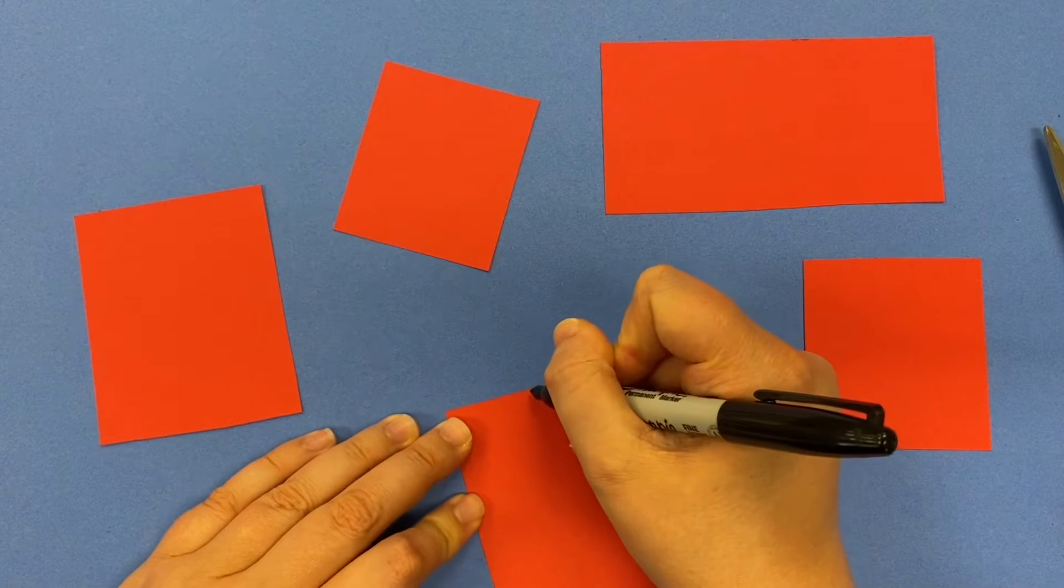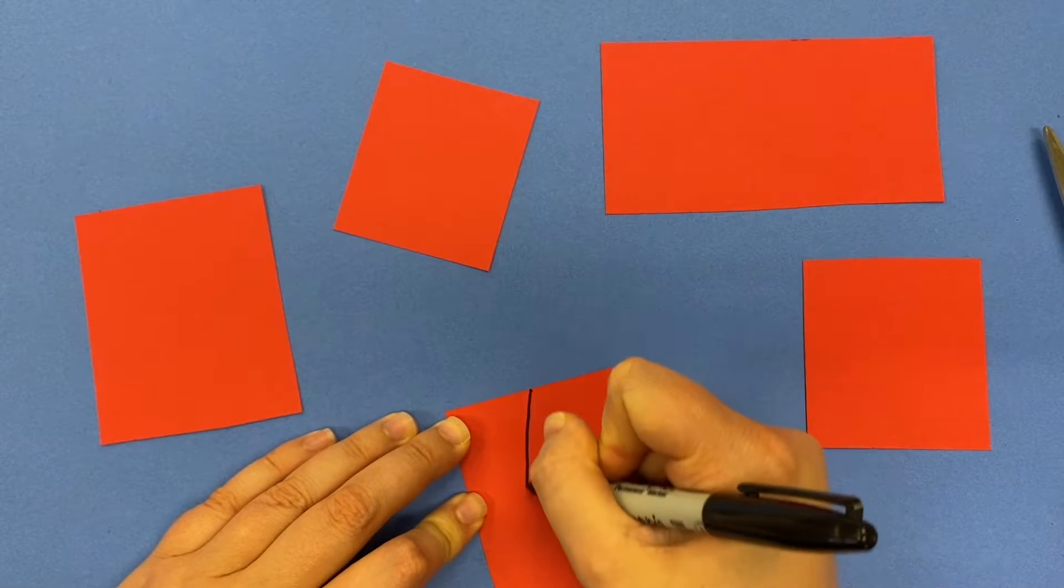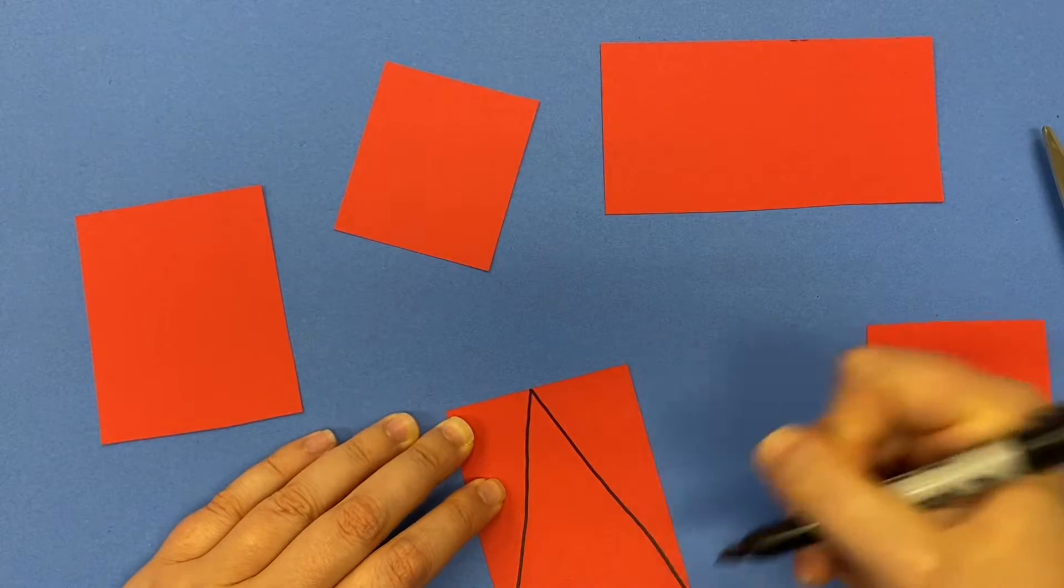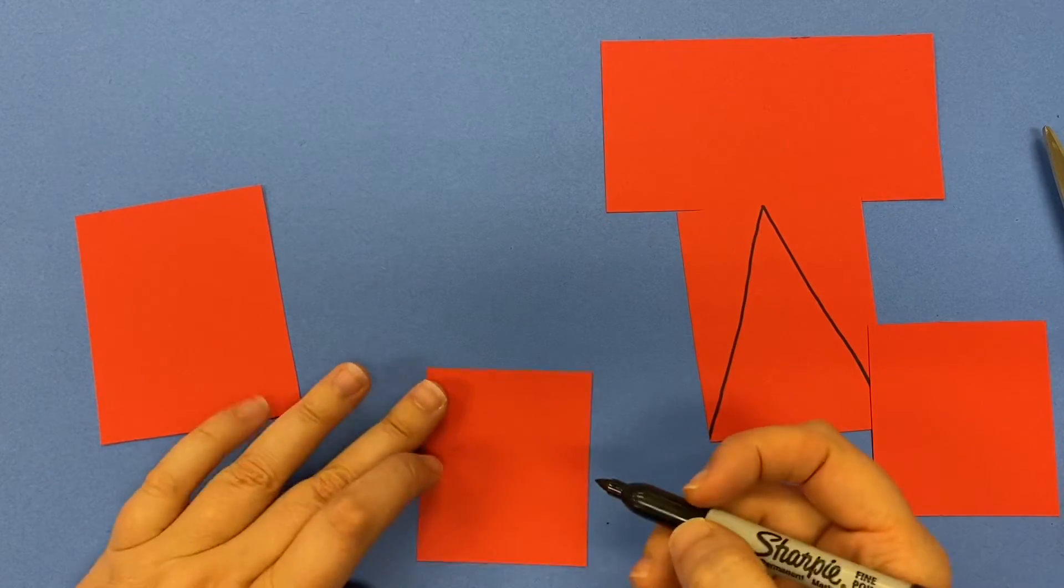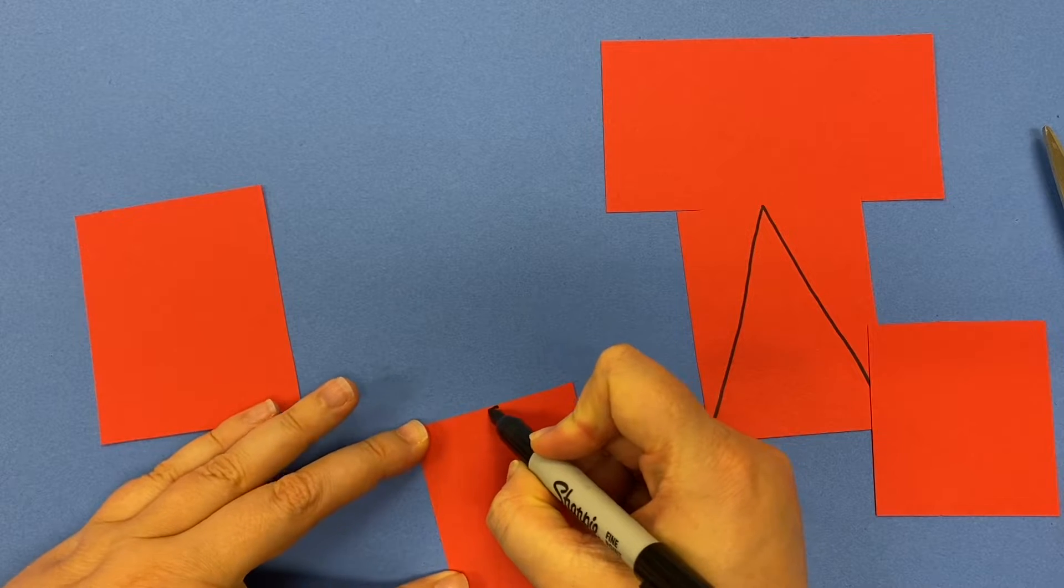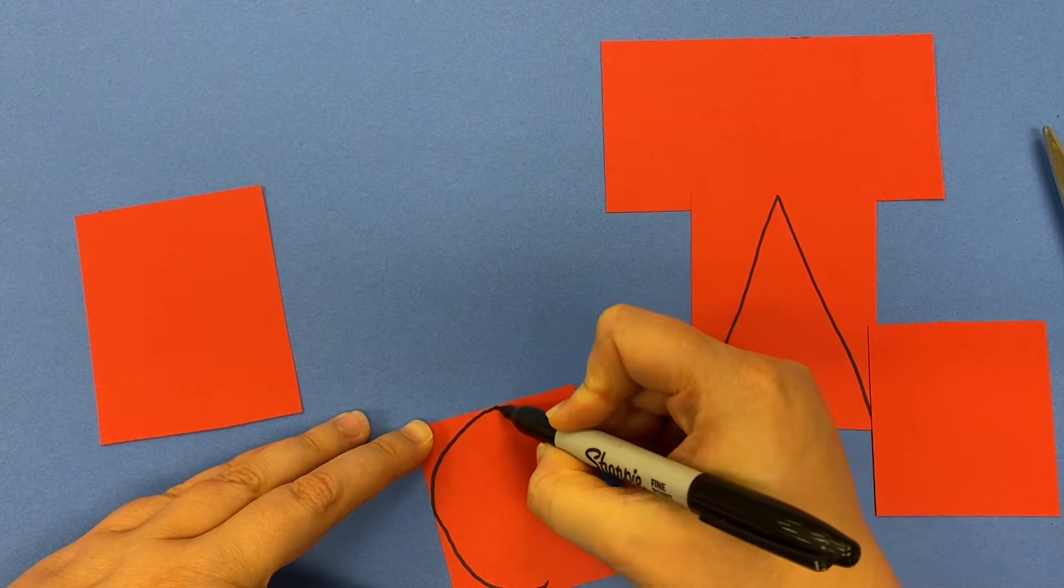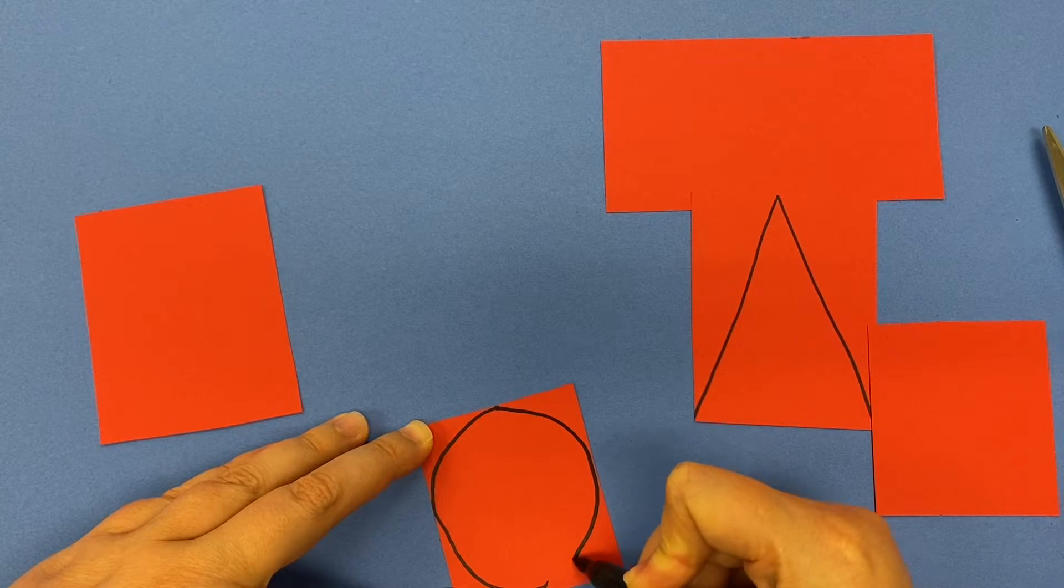And then the other ones, we want to make a shape that fills up the whole piece. So I've got a triangle. If I'm going to do a circle, that circle needs to fill up that whole square.